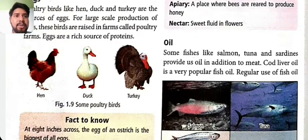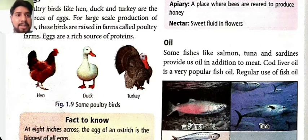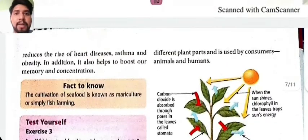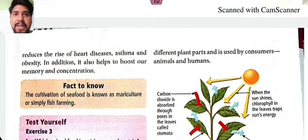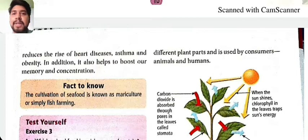Some fishes like tuna and salmon provide us with oil in addition to meat. Cod liver oil is a very popular fish oil. Regular fish oil use reduces the risk of heart diseases, asthma, and obesity. It also helps to boost memory and concentration. The cultivation of seafood is known as fish farming.